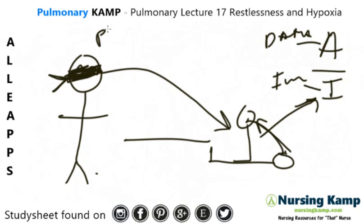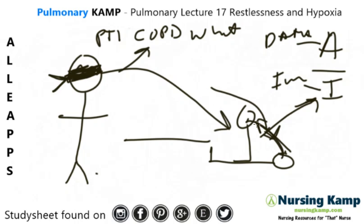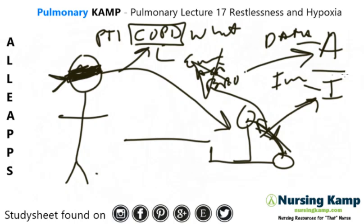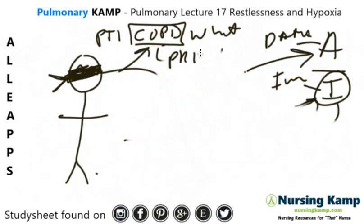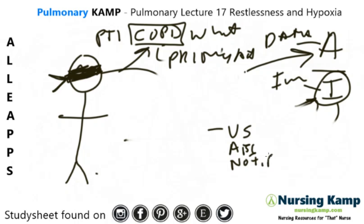Let's look at this in the form of a question: A patient is admitted with COPD. What is the nursing priority action? The options are: vital signs, an ABG, notify the doctor, or place the patient in high Fowler's.